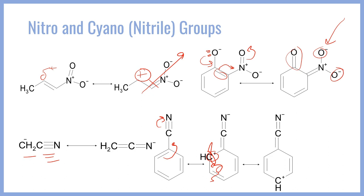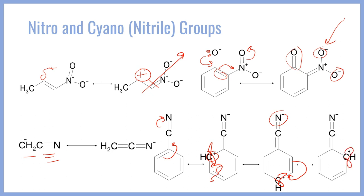We have now moved the positive character onto the carbon at the para position, opposite the cyano group, and notice the nitrogen is still negatively charged. We can do this one more time and push this electron density into that bond, and that will give us this resonance structure where now this carbon has an empty p orbital and a formal positive charge. Once again, nitrogen is still formally negative.